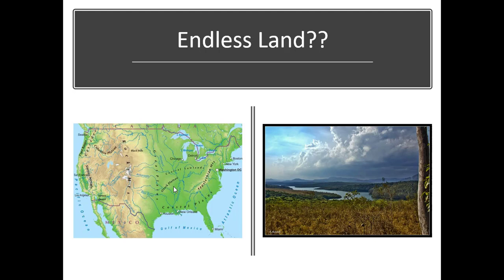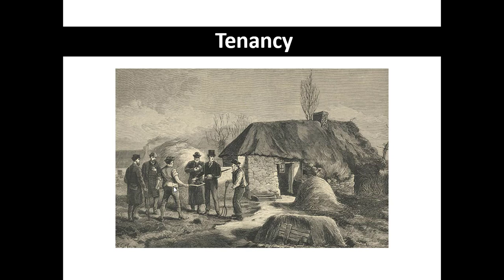The people who came were looking for opportunity. Back in Europe, they were tenants — you didn't own land. It was very difficult to own land as a common person; 75% of the land was owned by the nobility, and much of the rest was unusable. This is one of the push factors that pushed people out of Europe. America pulled them with the promise of land — push-pull factors — and they came in huge numbers.